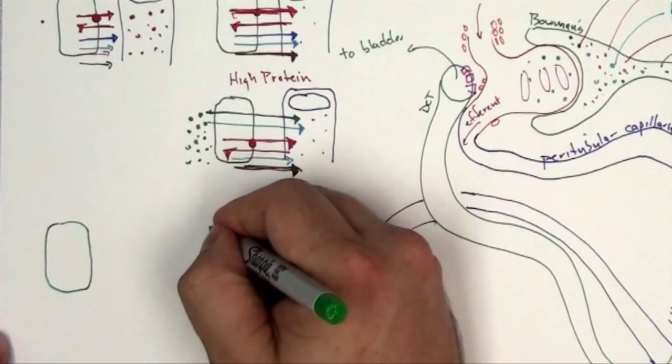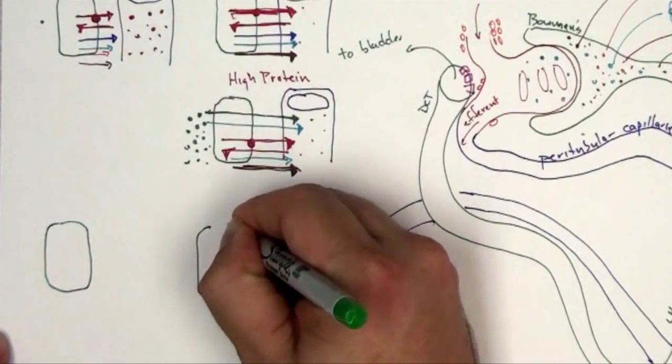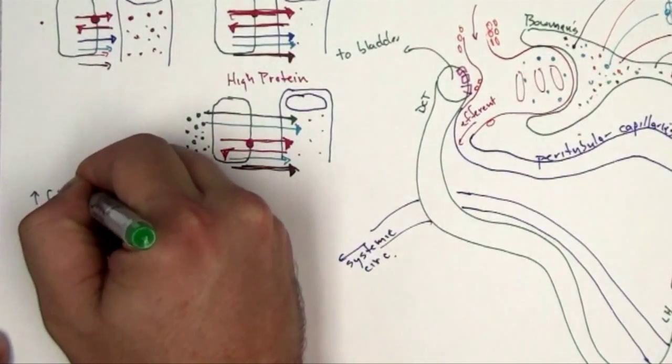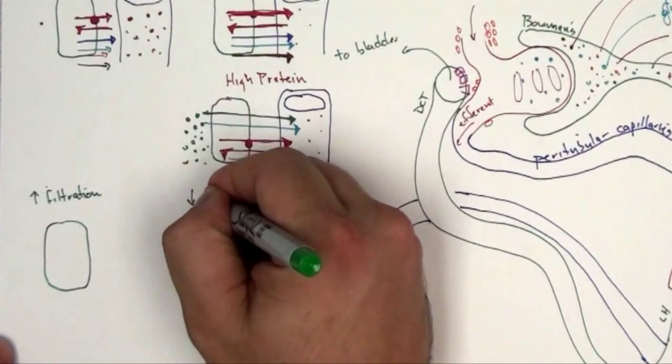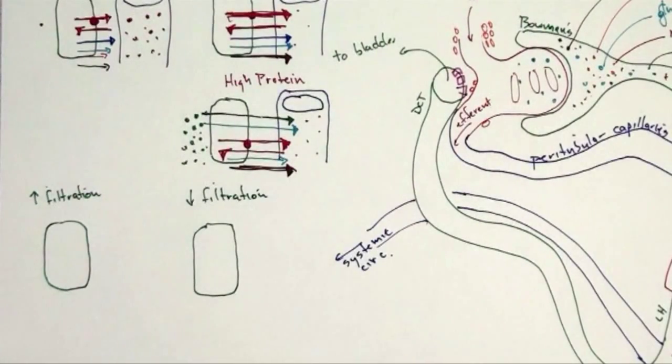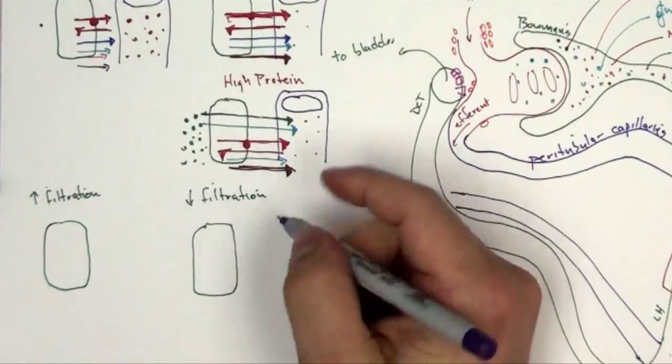I'm going to do another case: what if I've got high filtration or what if I've got low filtration? This is just a beautiful example of how the kidney tries to maintain balance. I'm going to get my paratubular capillaries on there again.